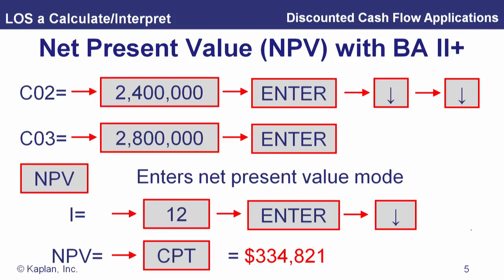Once those are in, press NPV. The calculator then prompts you for the interest rate to use. Enter that, hit the down arrow, then compute, and that gives you the net present value of $334,821.